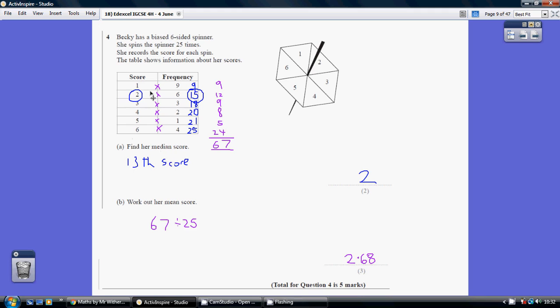So where is the 13th score? Now this table already has it in order. We've got 9 scores of 1, 6 scores of 2, 3 scores of 3, and so on. We're looking for the 13th score.